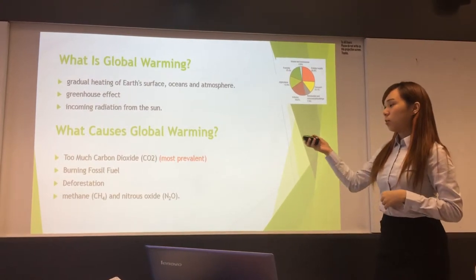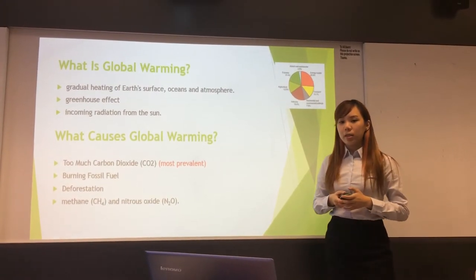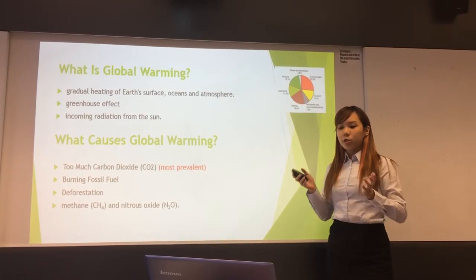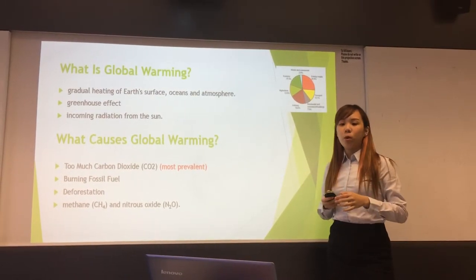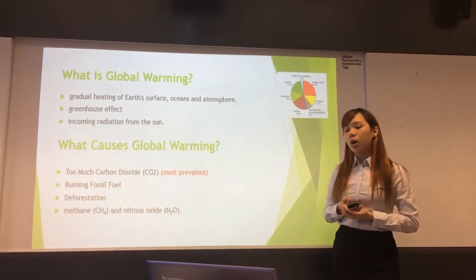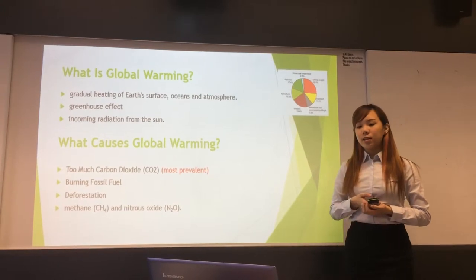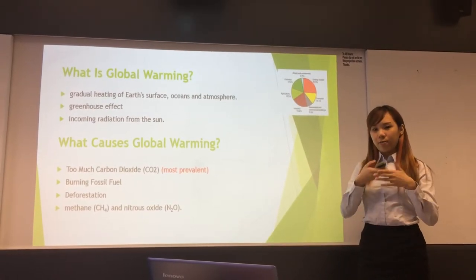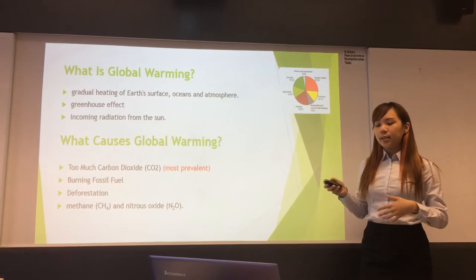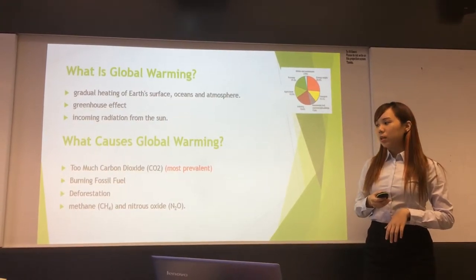What causes global warming? Global warming is caused when there's too much carbon dioxide in the atmosphere, which acts as a blanket trapping heat and warming the planet. As we burn fossil fuels like coal, or burn forests to create plantations, carbon dioxide accumulates and overloads the atmosphere. Greenhouse gases like methane and nitrous oxide are also responsible for causing global warming.